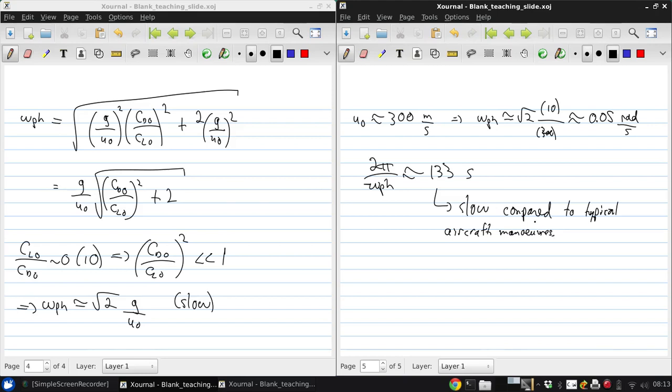Okay, so we can also define a damping ratio, and this was discussed in one of the homework assignments. The damping ratio of the fugoid is minus sigma pH over the square root of sigma pH squared plus omega pH squared, and we can work that out to be approximately 1 over root 2 times CD0 over CL0.